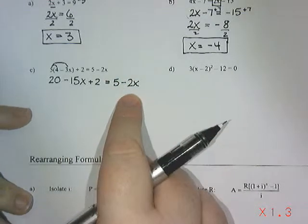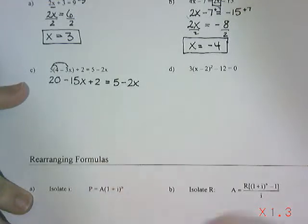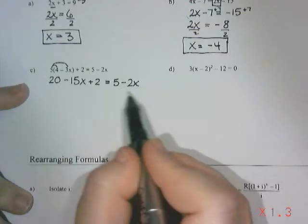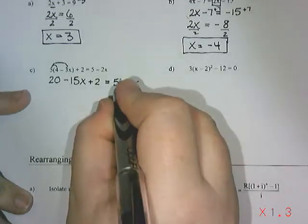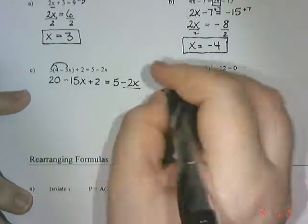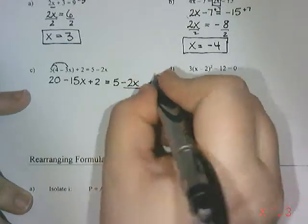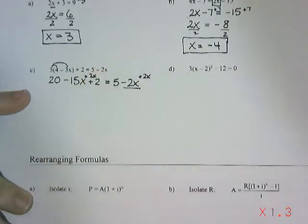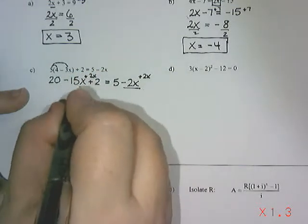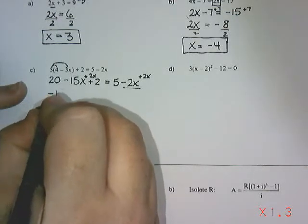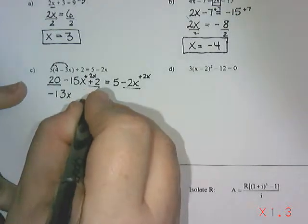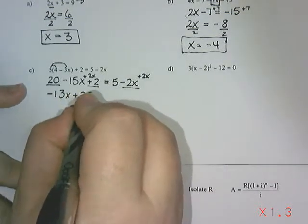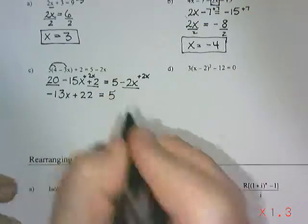Now this is the same situation as the previous question. You want to try to get all the x's on one side. Now it's your choice. You can move the 15x over. You can move the 2x over. It doesn't really make a difference. I'm going to move the 2x over. So it is a minus 2x. So I'm going to actually add 2x to both sides. So that's going to give me, on this side, negative 13x. And then I'm going to put together the numbers. I might as well. 20 plus 2 is 22. And then over here, all I have left is that 5.